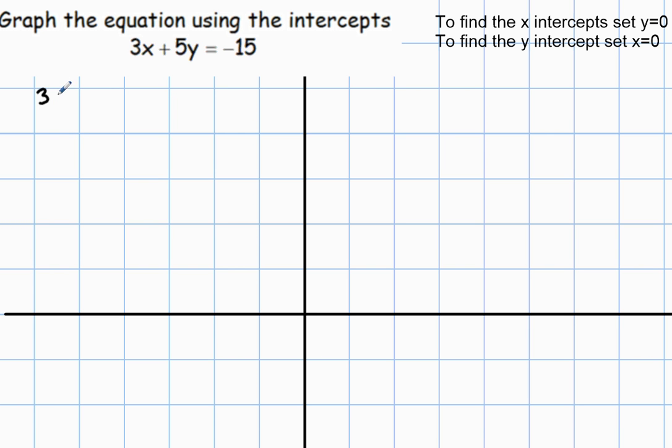So it's going to be 3x plus 5 times 0, which is 0, equals negative 15. Therefore, I get 3x equals negative 15. And if I divide by 3 on both sides, I get x equals negative 5.